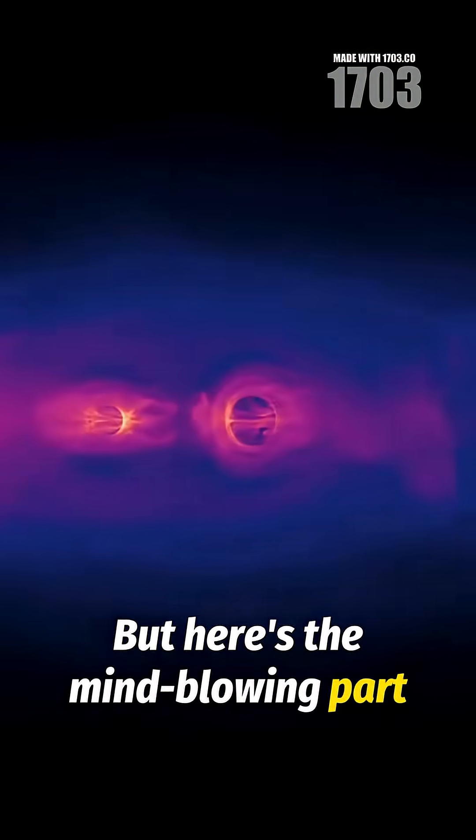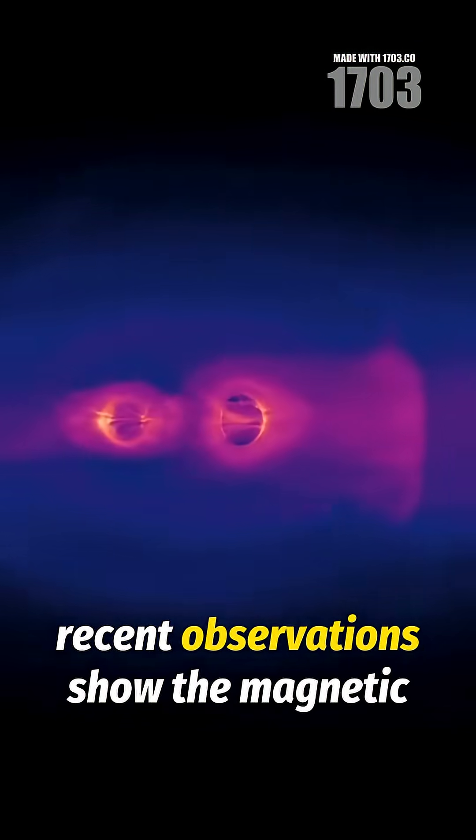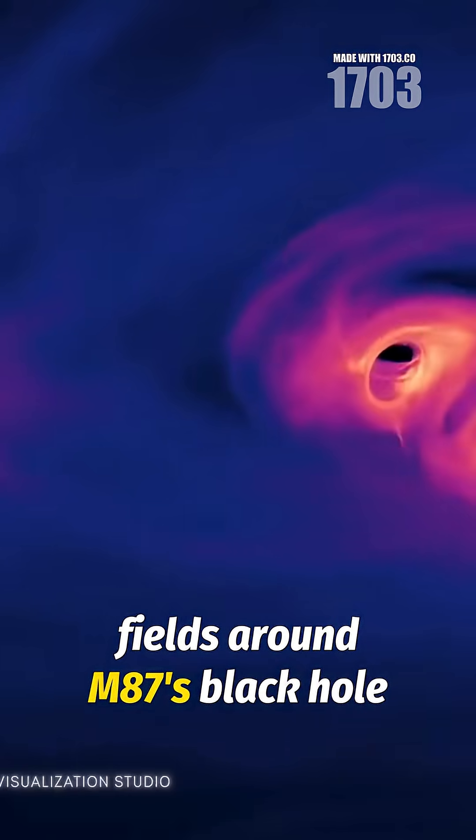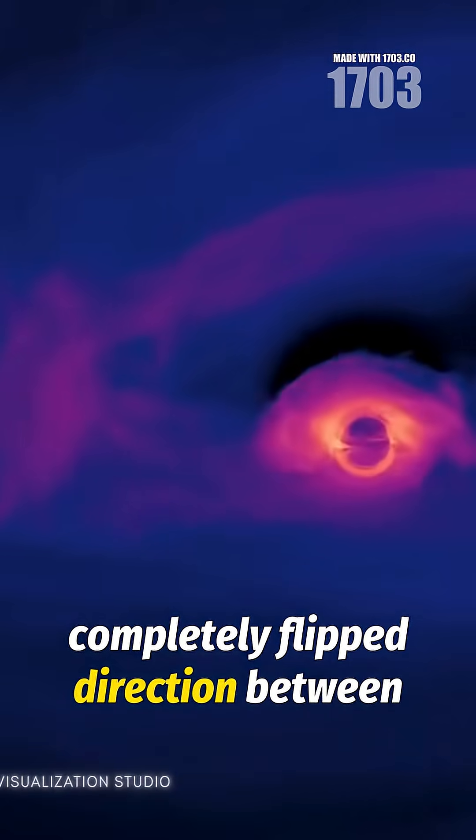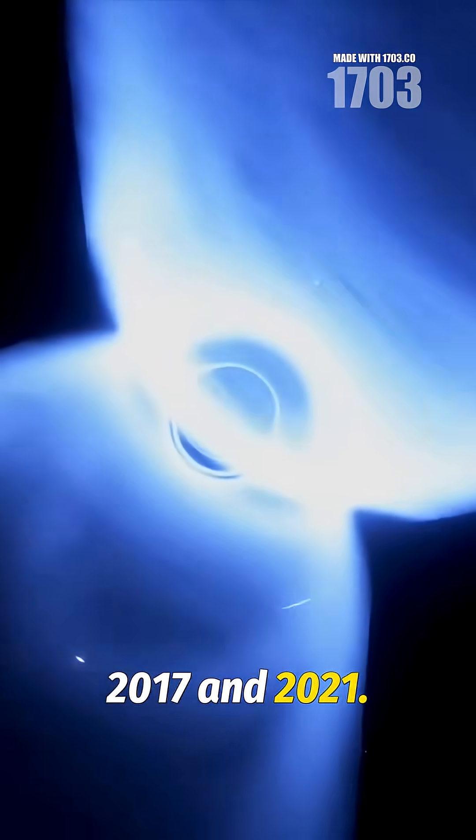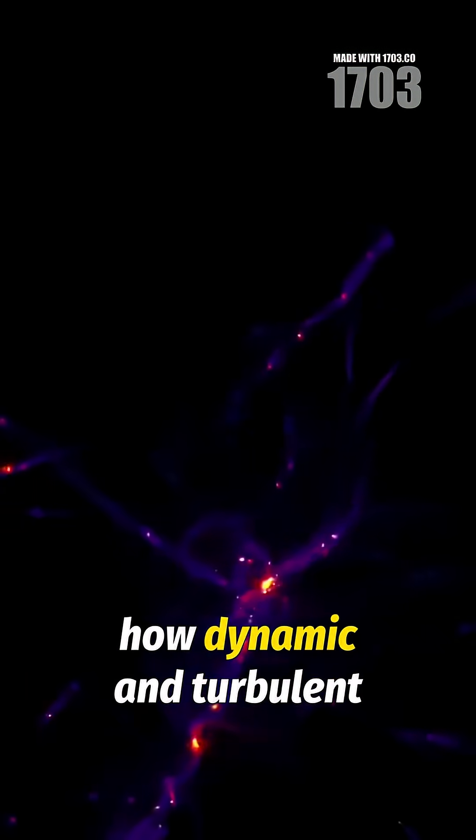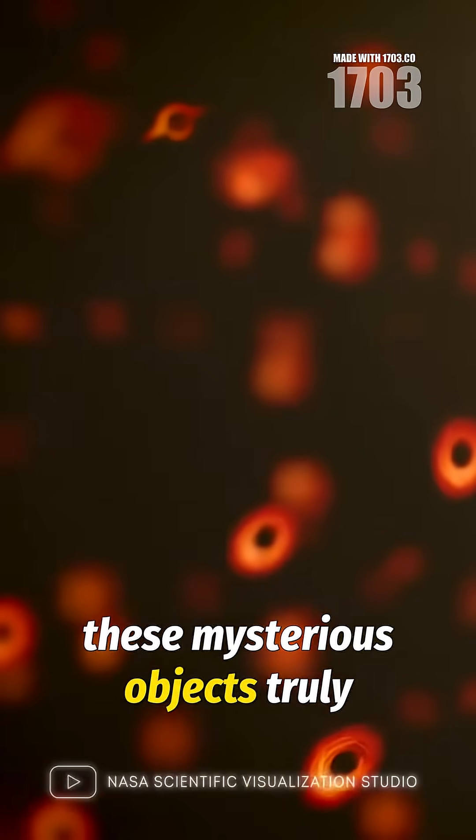But here's the mind-blowing part. Recent observations show the magnetic fields around M87's black hole completely flipped direction between 2017 and 2021. This cosmic weather reveals how dynamic and turbulent these mysterious objects truly are.